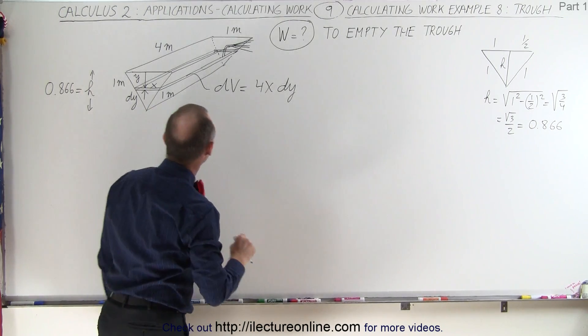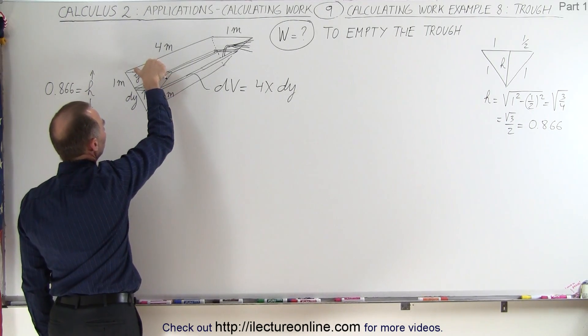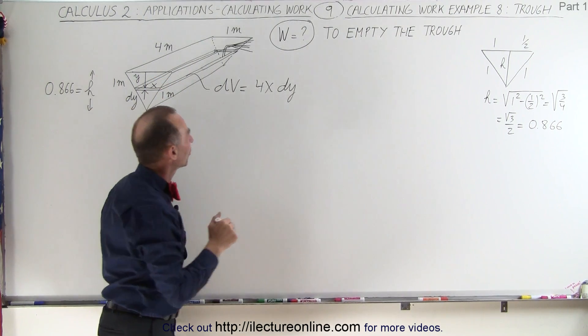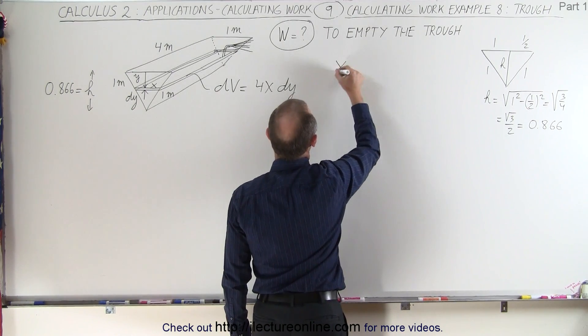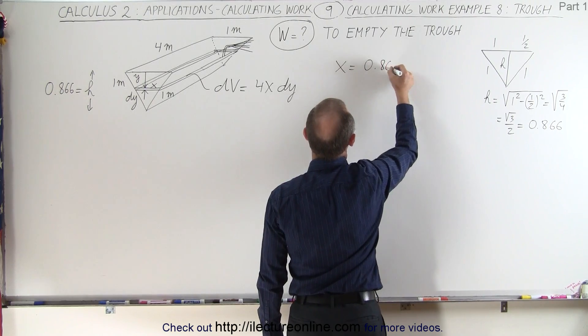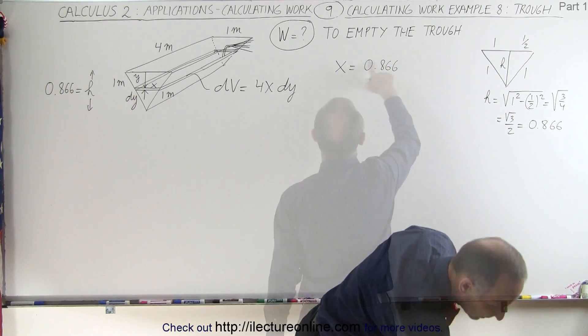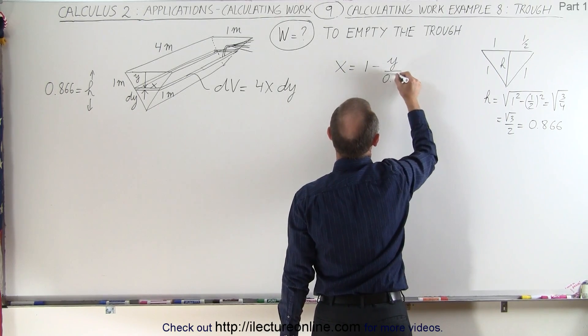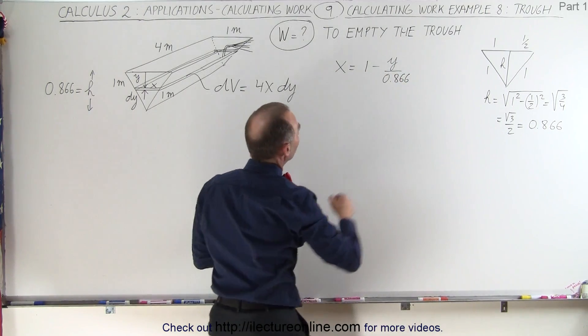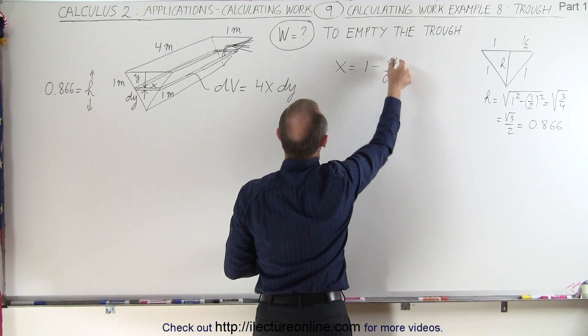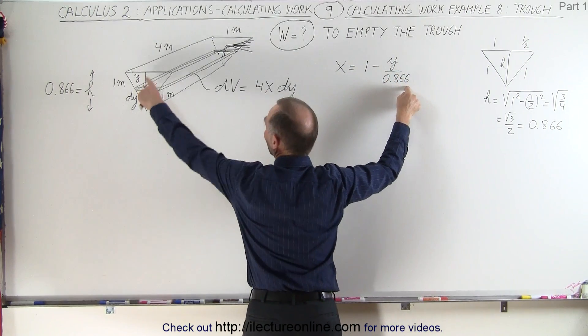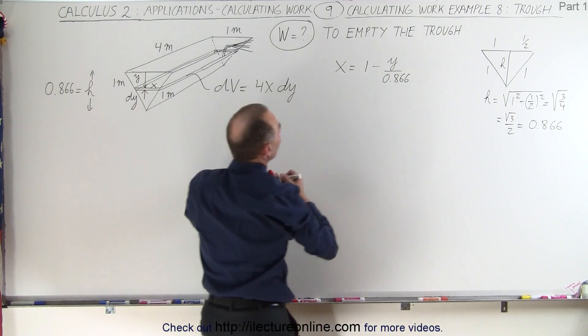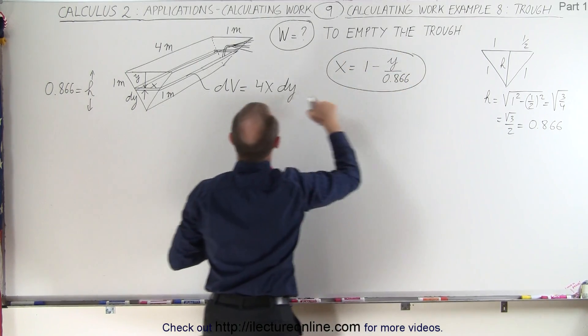Now how do we relate x to y? Well, when y is 0, x is 1. When y is 0.866, x is 0. So that means that x is going to be equal to 1 minus y divided by 0.866. Let's see if that works. When y is equal to 0, x equals 1. When y equals 0.866 at the bottom here, then this divided by that, it'll be 1. 1 minus 1 is 0, and that works. So there's our relationship between x and y, which can go in here.